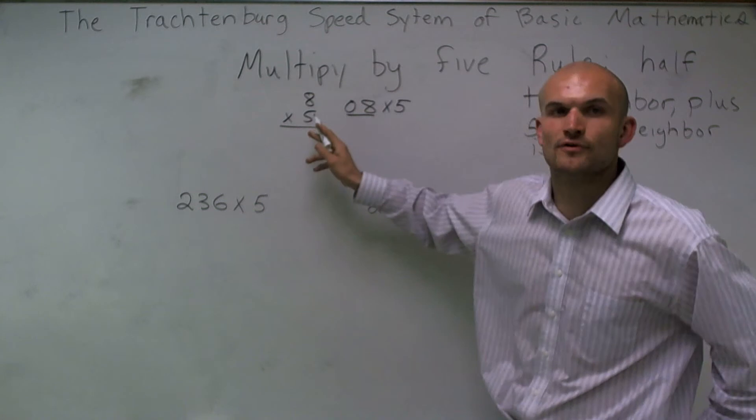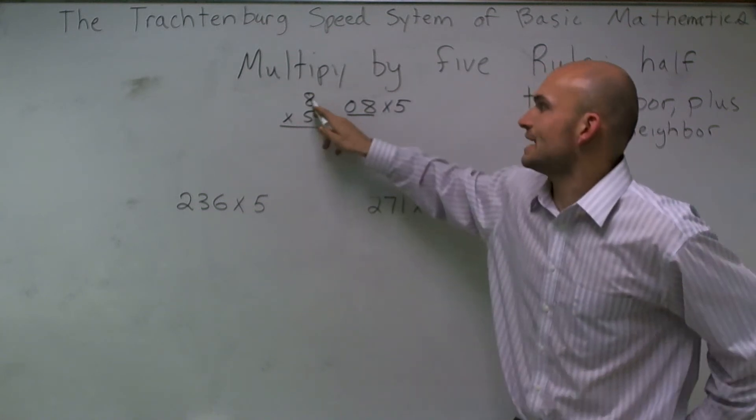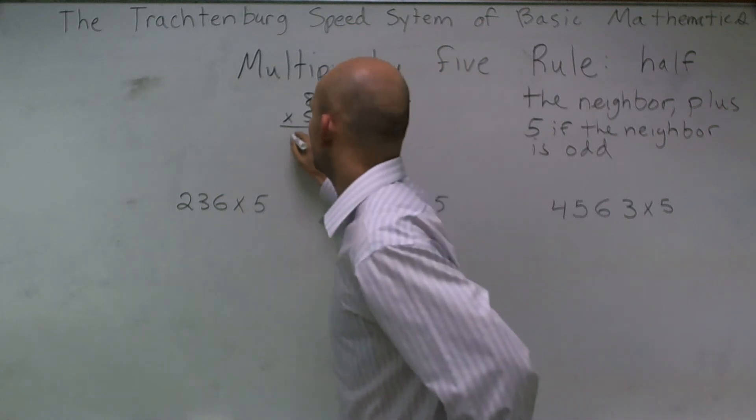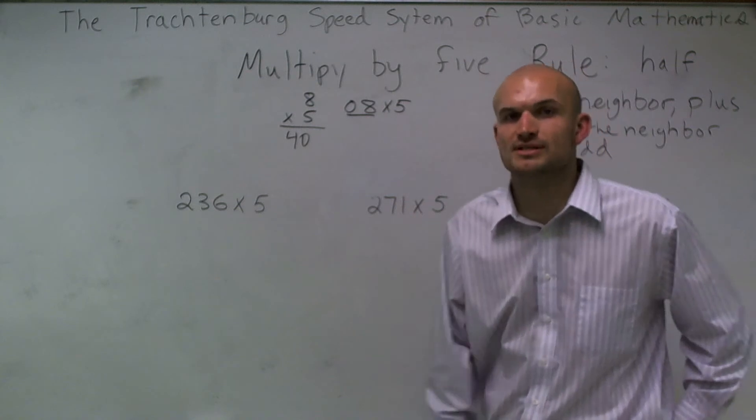Here, we know that 8 times 5 is 40. And that's the way that most of us learned how to multiply numbers. Well, in the Trachtenberg system, what we do is we have our rule, like I previously spoke about.